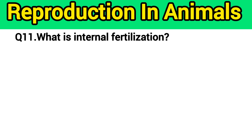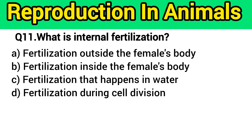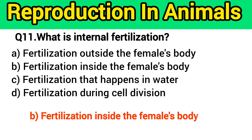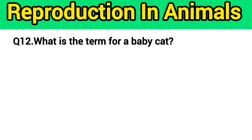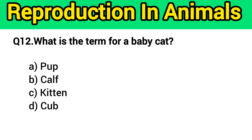Question number 11: What is internal fertilization? The right answer is option B — fertilization inside the female's body. Question number 12: What is the term for a baby cat? The right answer is option C — kitten.